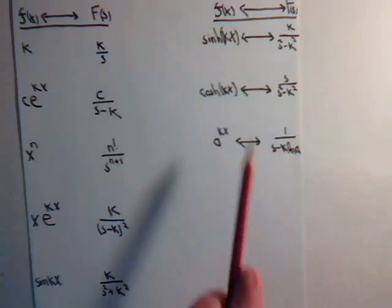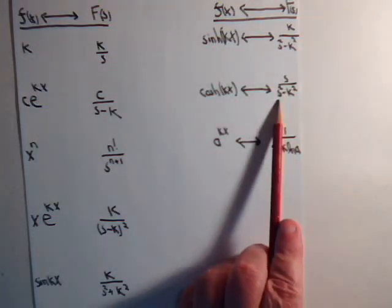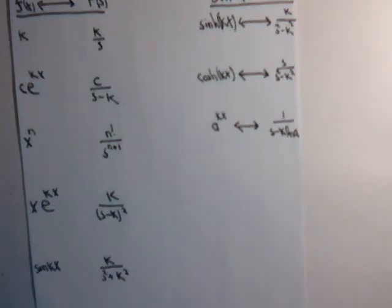And likewise for the hyperbolic cosine of kx, we have s over s squared minus k squared. If this was the trig function, the cosine of kx, then it would be s over s squared plus k squared.